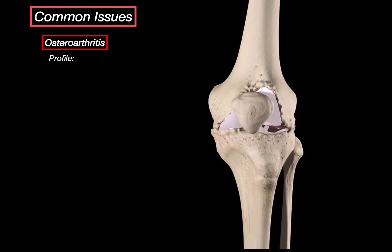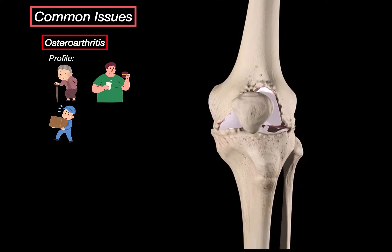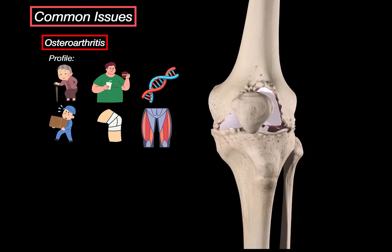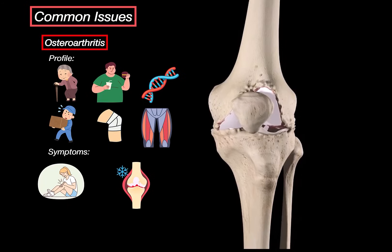Who typically develops osteoarthritis of the knee? It's usually older adults, especially women after menopause, likely due to hormonal changes that affect cartilage repair. Obesity is a big factor too, because more weight means more pressure on the joint with every step. Repeated stress from certain jobs, prior injuries, and surgeries can also make the joint more vulnerable. Genetics plays a role, and muscle weakness — particularly in the quadriceps — can reduce the joint's stability and increase wear over time. People often describe pain during activities like walking or climbing stairs, stiffness after rest usually lasting less than 30 minutes, swelling, a cracking or grinding sensation called crepitus, and reduced range of motion.